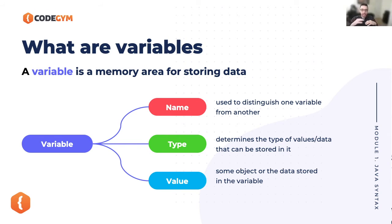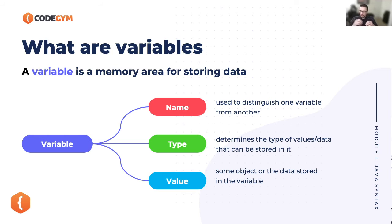The second thing associated with variables is a type — you could have different types of variables. It could be a number, it could be text, it could be a lot of different things. And the last thing is the actual value. It's like assigning an address and actual content — if you're getting mail, the address is the destination and the actual content is the letter inside.